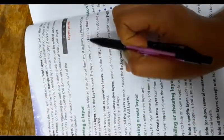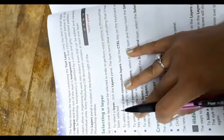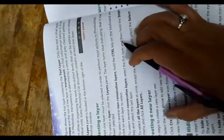To select several non-consecutive layers, hold the CTRL key on the keyboard and click on each layer to select. To select several consecutive layers, select the first layer and then hold the shift key and select the last layer.